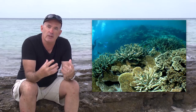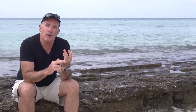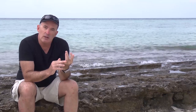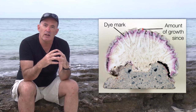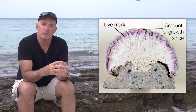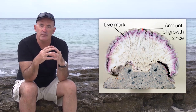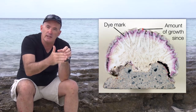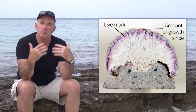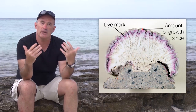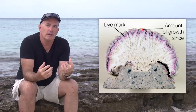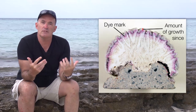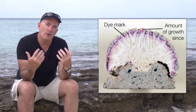Given the importance of calcification to reef ecosystems, scientists have come up with a number of ways of measuring calcification. One methodology involves putting corals in a non-toxic dye and putting them back out in the field. If the skeleton is then cut open at a later stage, it's possible to see the stained layer within the skeleton and calculate how much calcium carbonate has been laid down since that dye mark. While this is a useful technique, it does involve killing the coral, which has implications for the types of questions one can ask using it.